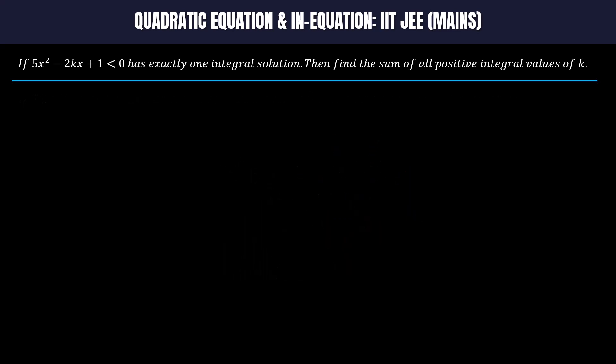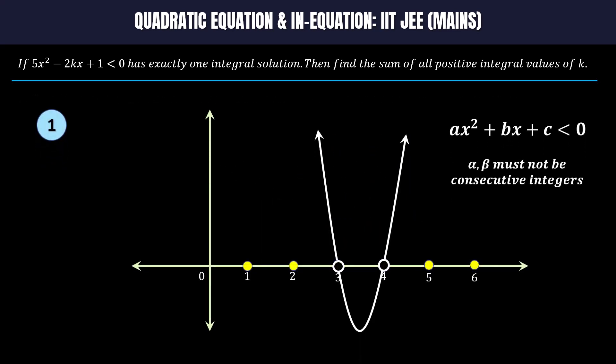To explain, I am going to use seven different graphs here. By looking at the first graph, we can clearly understand that for exactly one integer solution, α and β must not be consecutive integers.